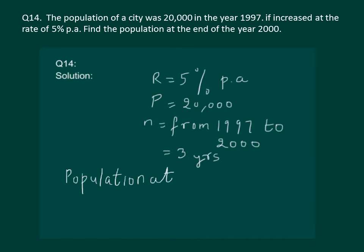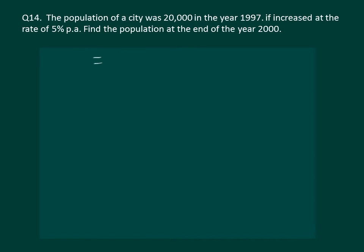So now we can write that population at the end of year 2000 would be equal to P times (1 + R/100) to the power n. Let us substitute the values which will be equal to 20000 times (1 + 5/100) to the power 3.